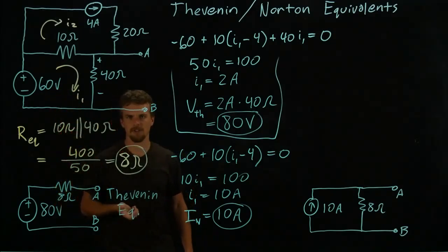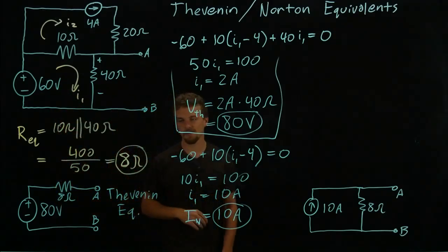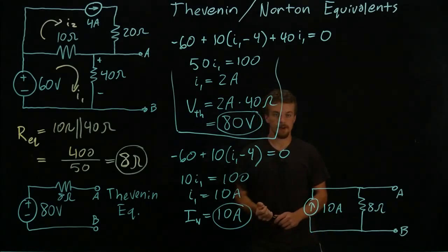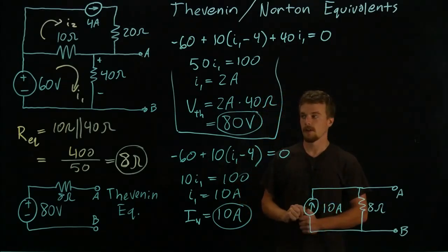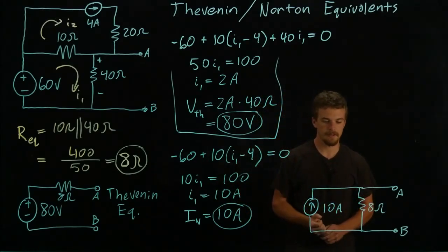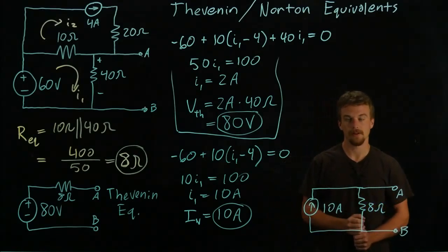We took out sources and looked at how resistors were arranged and found a resistance, which is a valid way to do it. But sometimes you're going to have circuits that have dependent sources in them. And in that case you can't do that. You can't take out dependent sources.